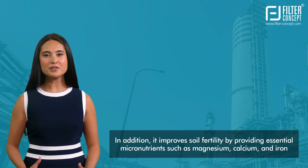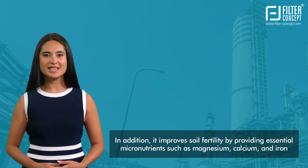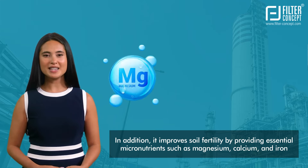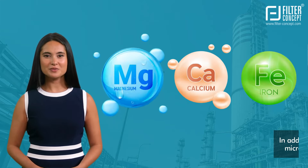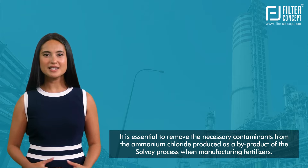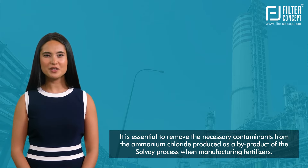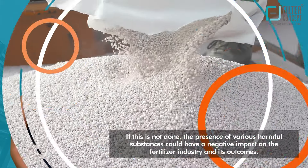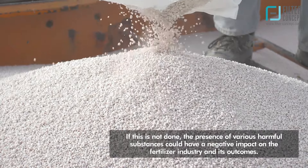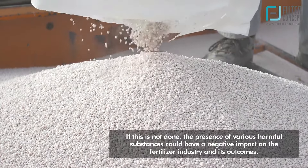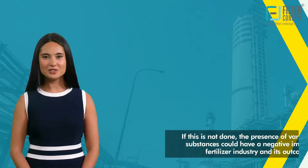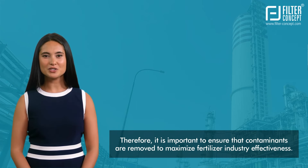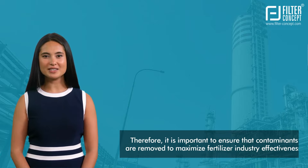In addition, ammonium chloride improves soil fertility by providing essential micronutrients such as magnesium, calcium, and iron. It is essential to remove contaminants from the ammonium chloride produced as a byproduct of the Solvay process when manufacturing fertilizers, as the presence of harmful substances could have a negative impact on the fertilizer industry. Therefore, it is important to ensure that contaminants are removed to maximize the fertilizer industry's effectiveness.